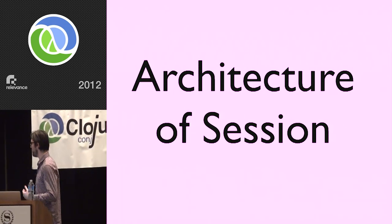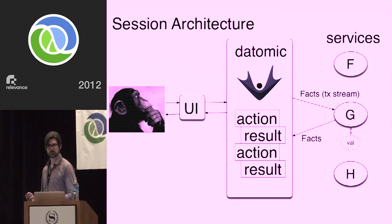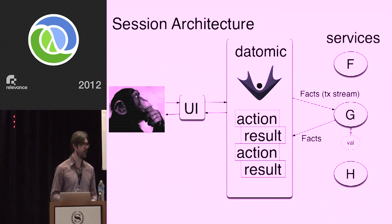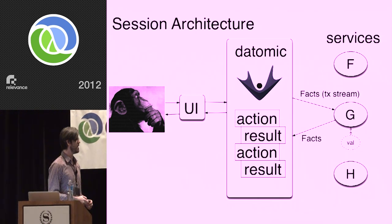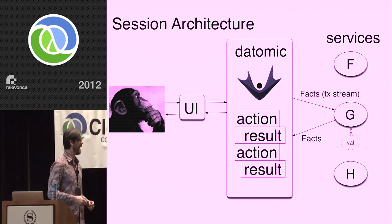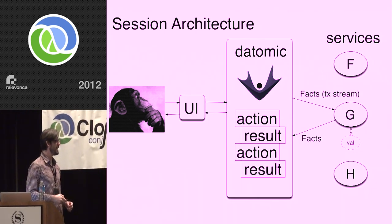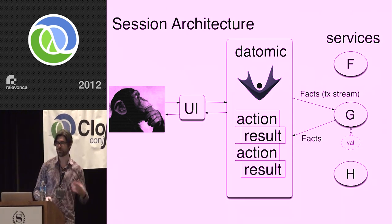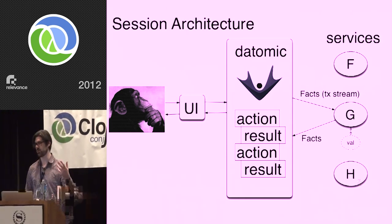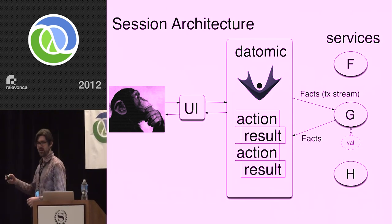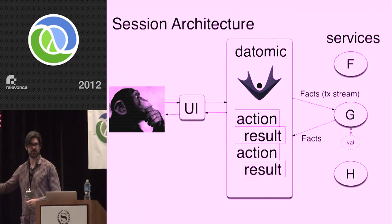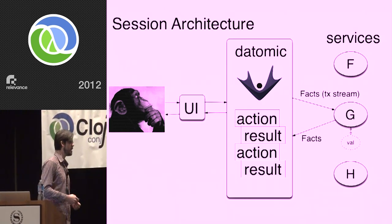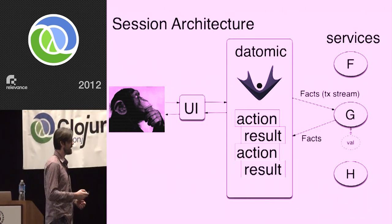Let's go a little bit into the architecture. It's all about Datomic in the middle, and then you have these machines or conveyor belts that move things around between Datomic and the person, and Datomic and the system. The person and the system never interact directly — it all goes through Datomic.